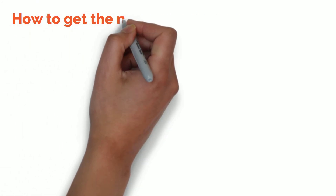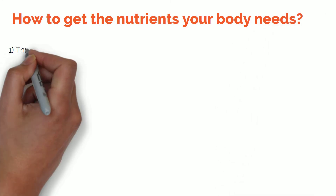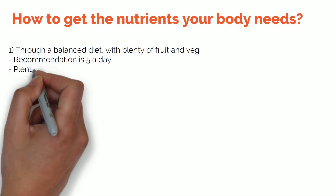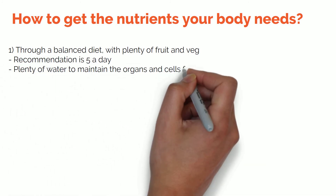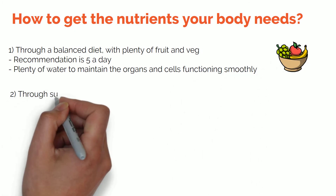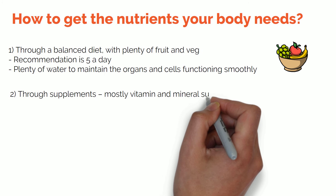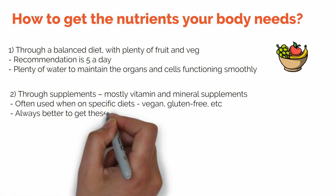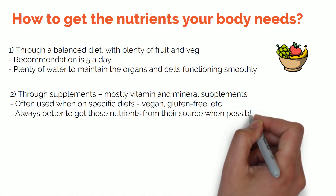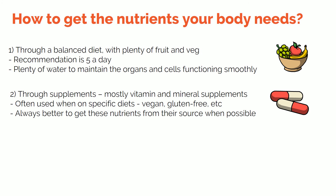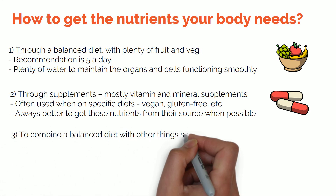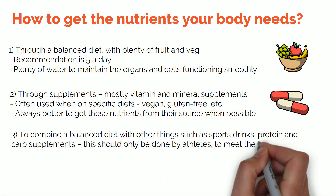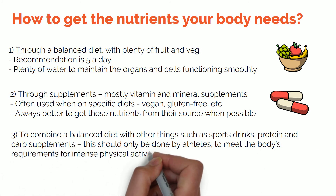There are three main ways to give the body the nutrients, both macro and micro, that it needs. The first is through a balanced diet with plenty of fruit and veg — the recommendation is five a day — and plenty of water to maintain the organs and cells functioning smoothly. The second is through supplements, mostly vitamin and mineral supplements, and this is often used when on specific diets such as vegan or gluten-free. It is always better to get these nutrients from their source whenever possible. The third way is to combine a balanced diet with sports drinks, protein and carb supplements, and more — this should only be done by athletes to meet the body's requirements for intense physical activity.